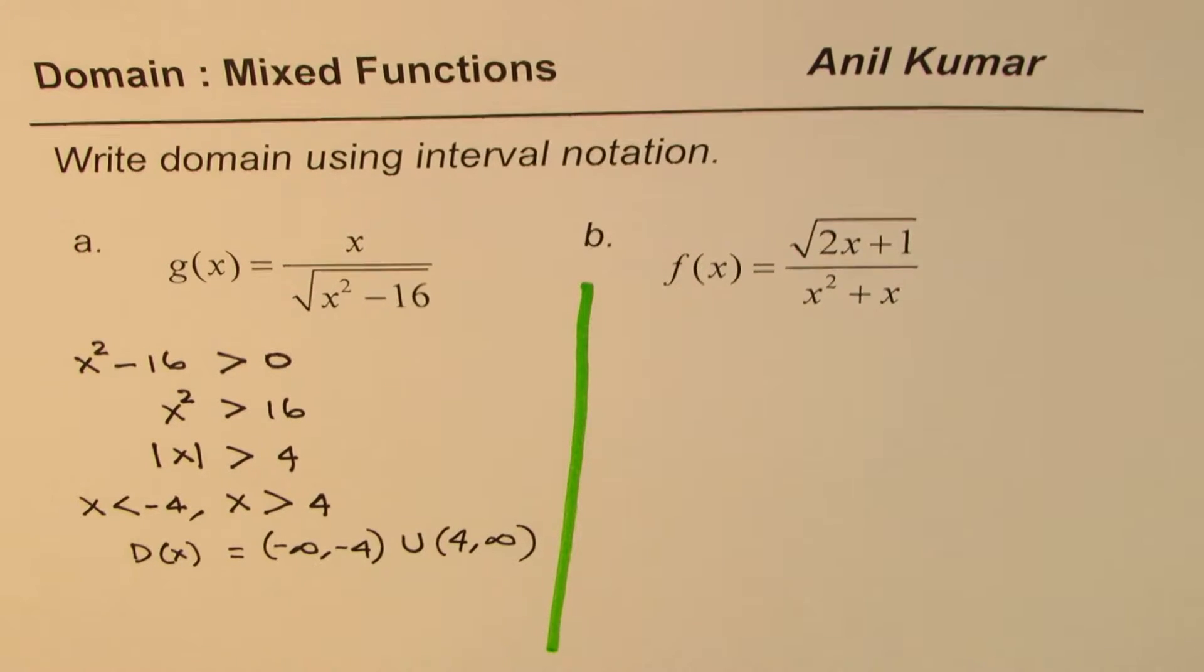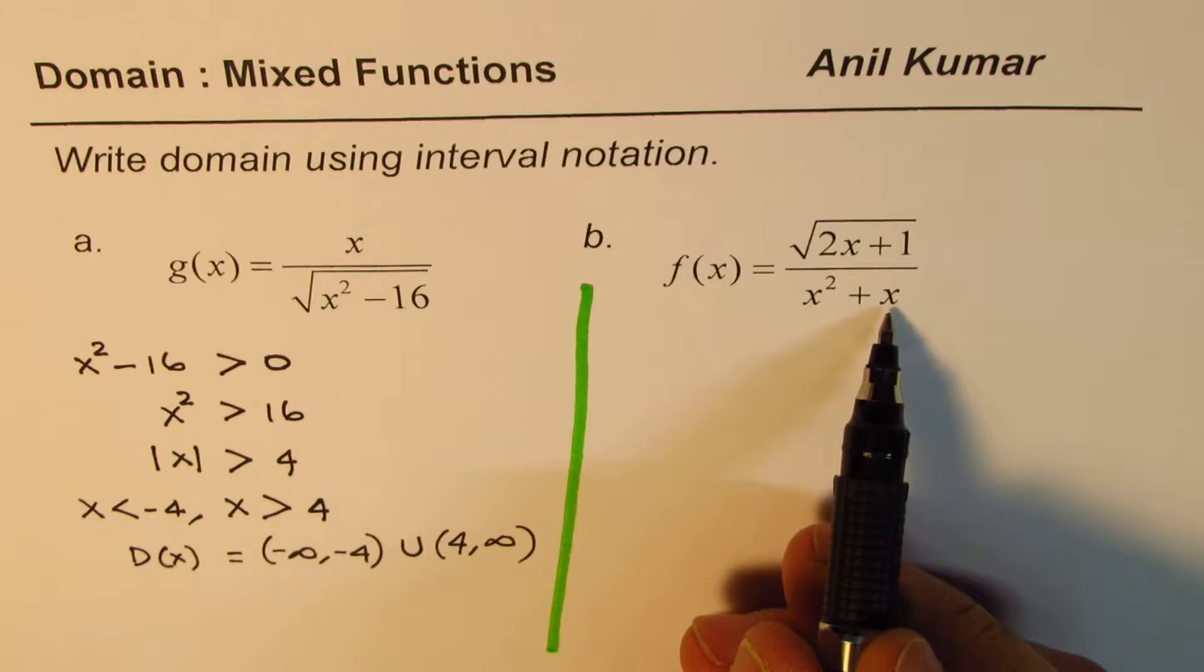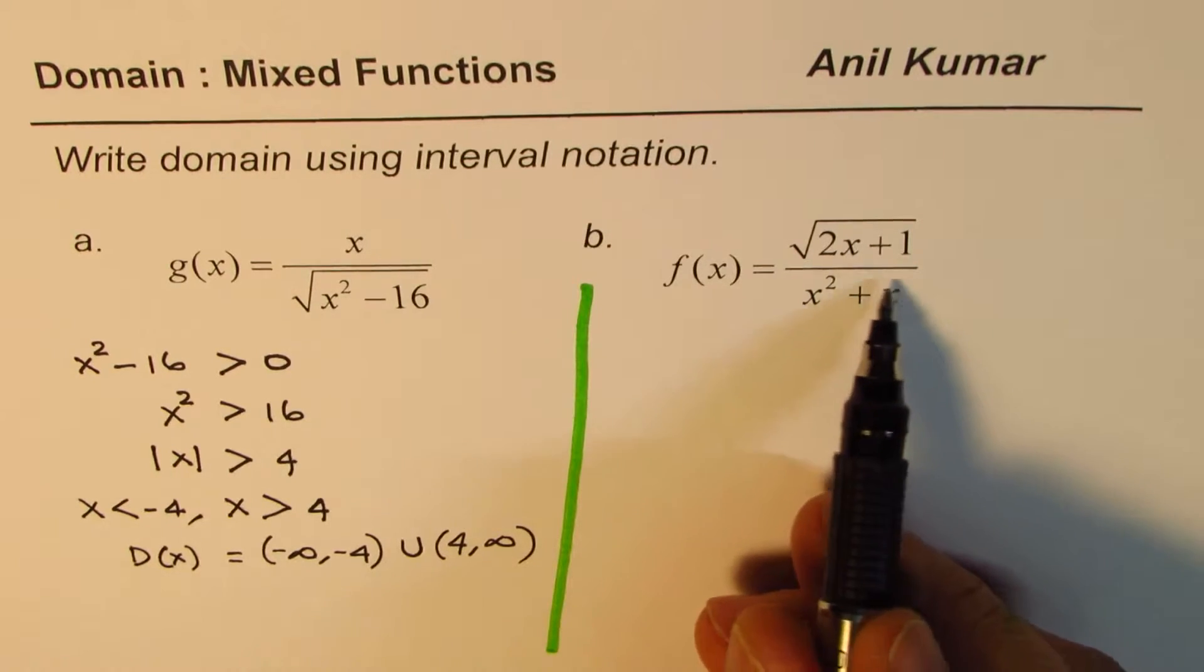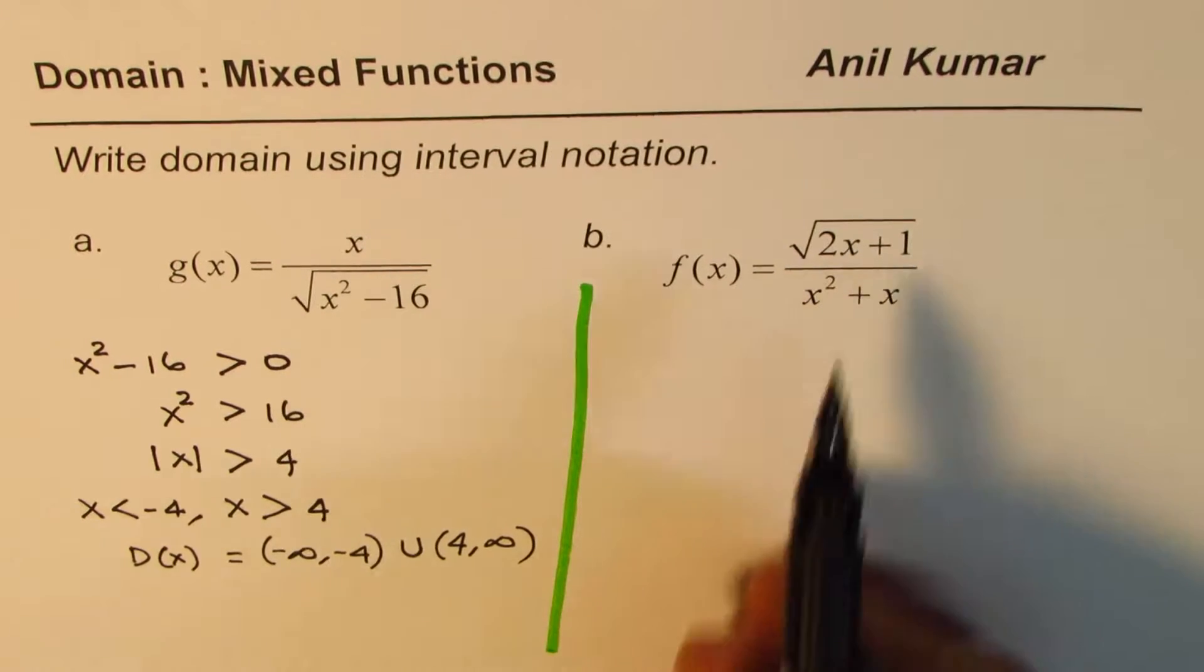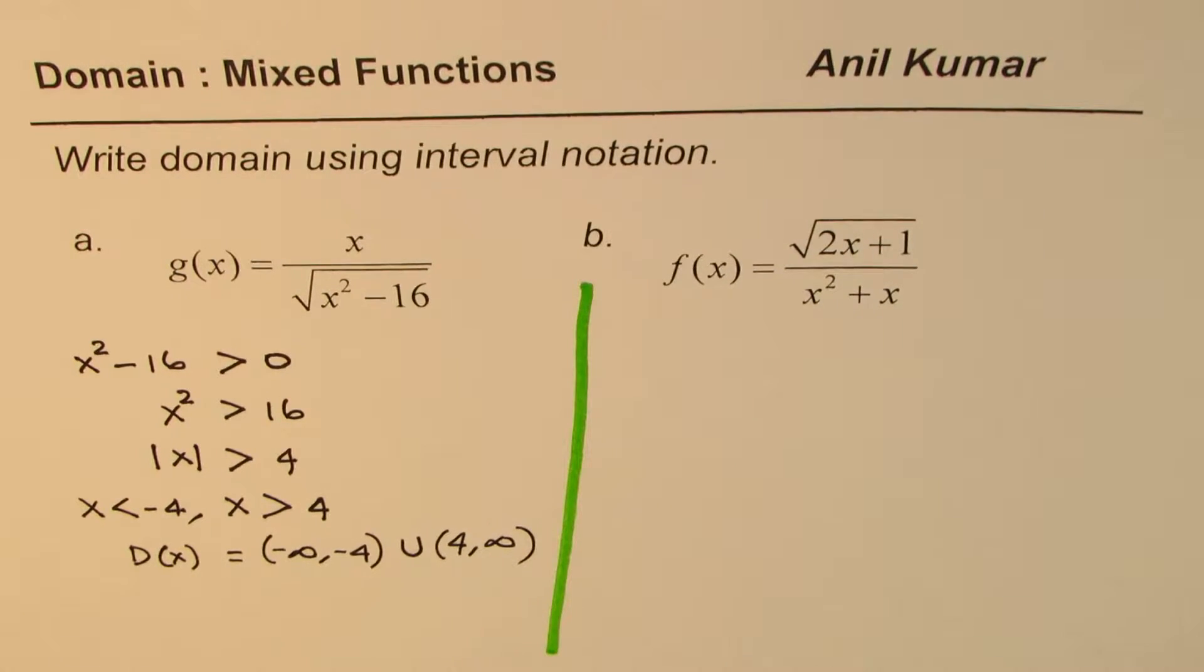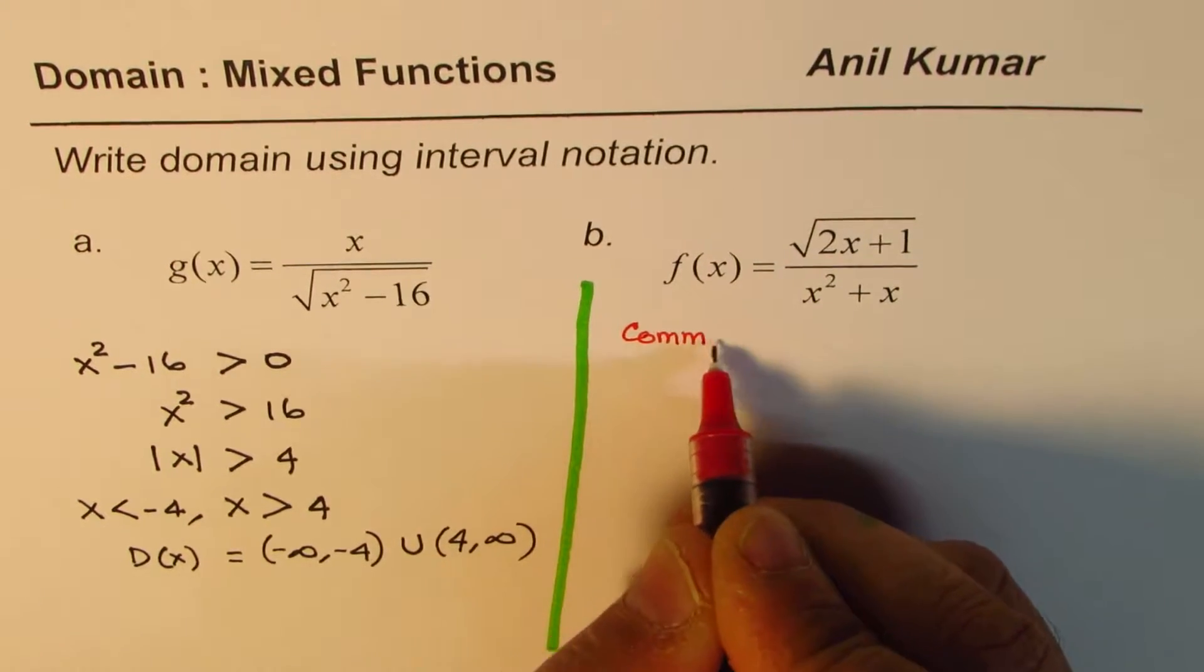Now let's look into the other function. We have x squared plus x in the denominator, that should not equal zero. The numerator here is square root of 2x plus 1. When you have this kind of function, then we are looking for common domain or you can say intersection.